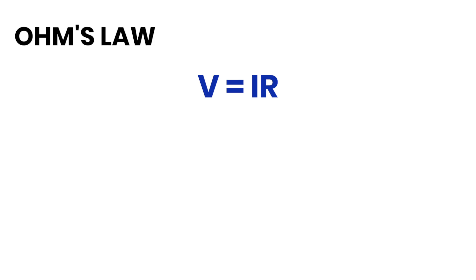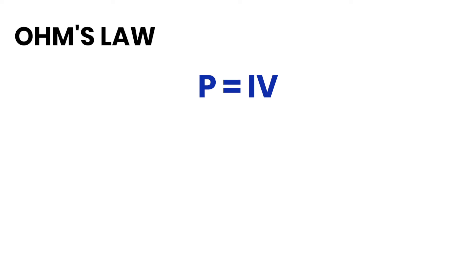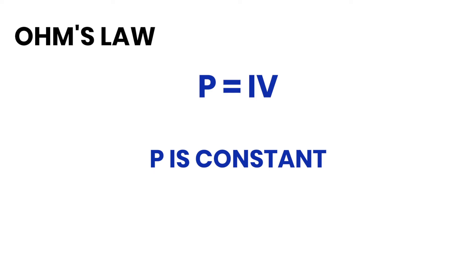So in two cases, voltage and current behave oppositely. Why opposite? First, let us understand. In Ohm's Law — V equals IR — when R, the resistance, is constant. In the other industrial case scenario, which is valid when power is constant — so here voltage and current have two different relationships: one is power constant, and one is resistance constant.